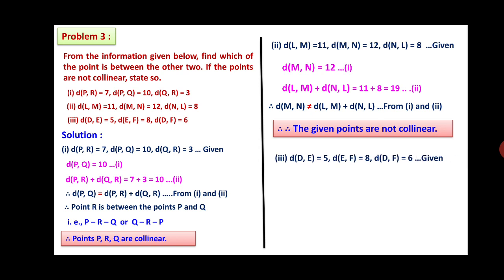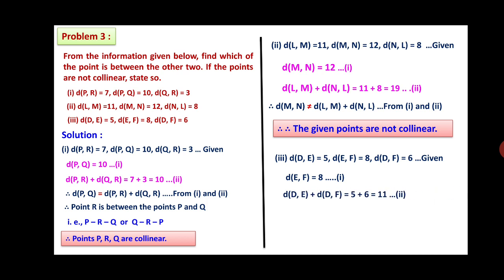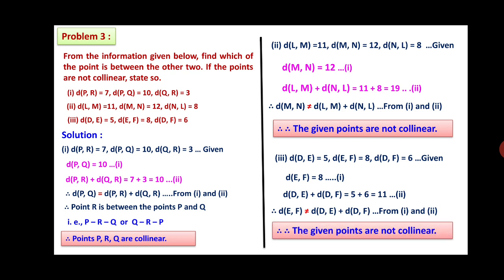Third: distance DE is 5, distance EF is 8, distance DF is 6. The greatest is 8, so distance EF equals 8 (equation 1). Distance DE plus distance DF equals 5 plus 6, which equals 11 (equation 2). From equations 1 and 2, distance EF is not equal to distance DE plus distance DF. Therefore, the given points are not collinear.